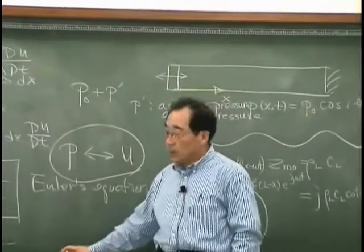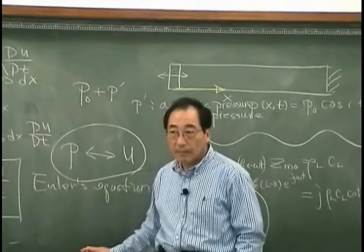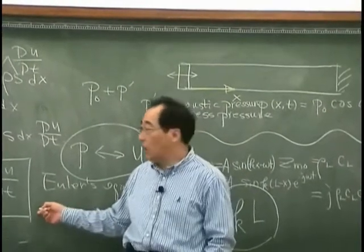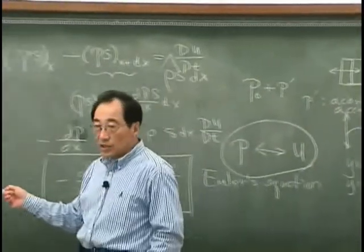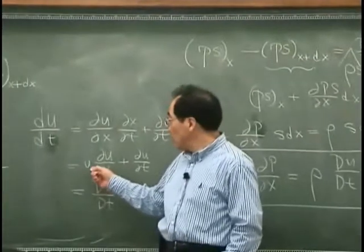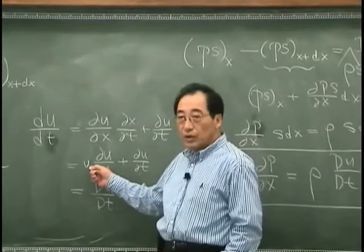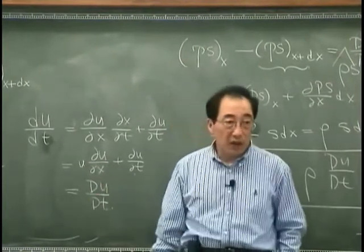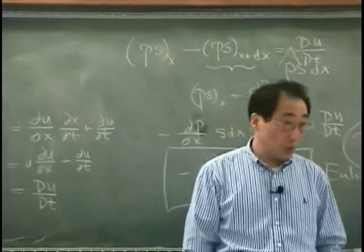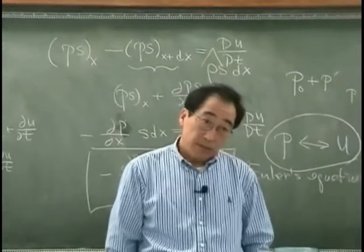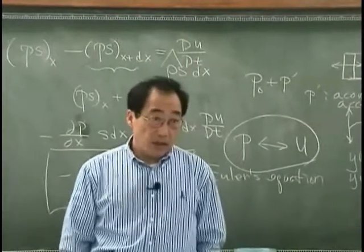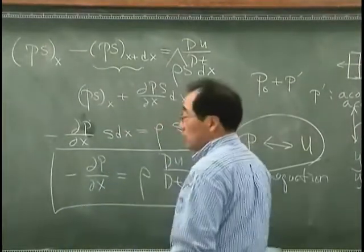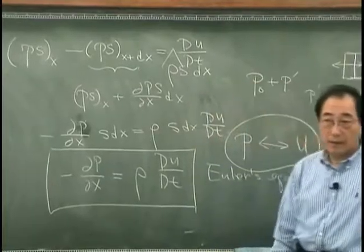So, this is Euler's equation. Can you then solve this? Unfortunately, this is function of U. And there is a multiplication term. Therefore, this is not linear with respect to U. So, it's rather difficult compared with what we have, the wave equation before.